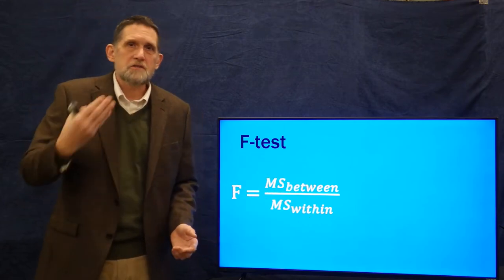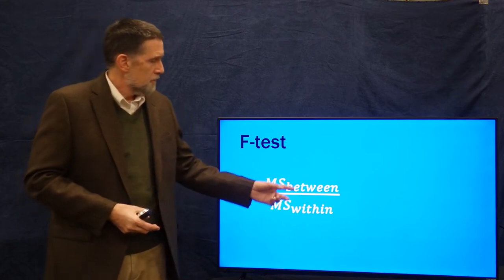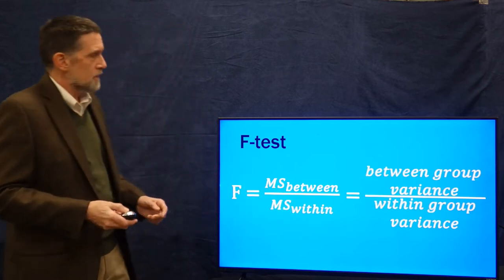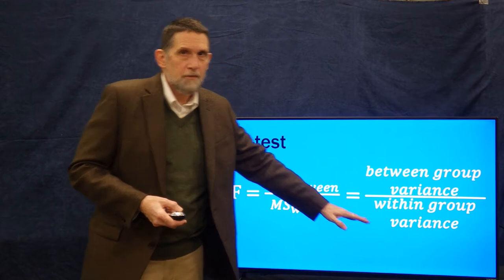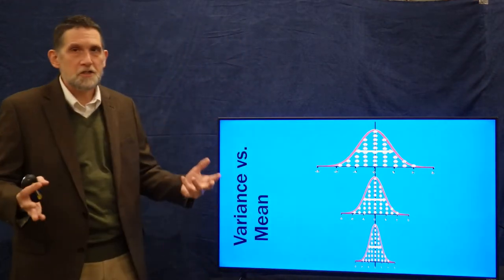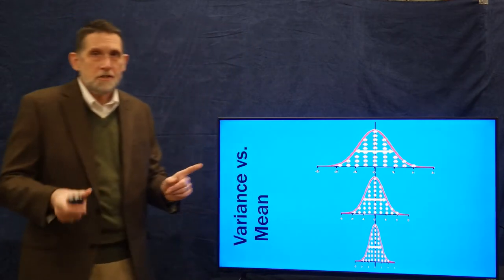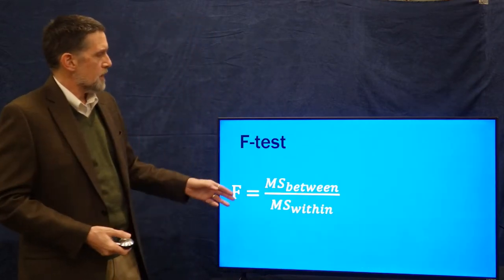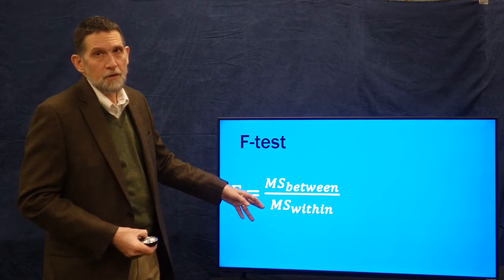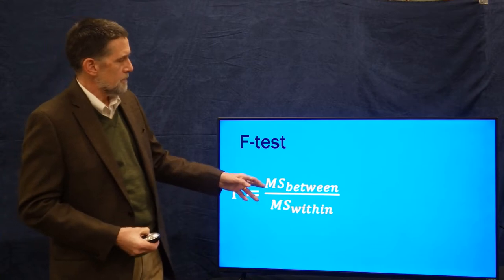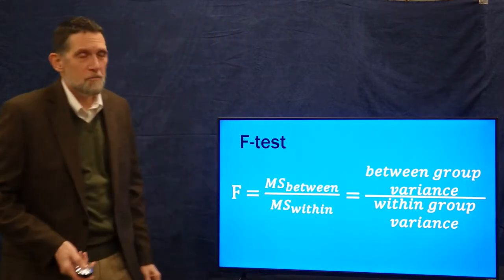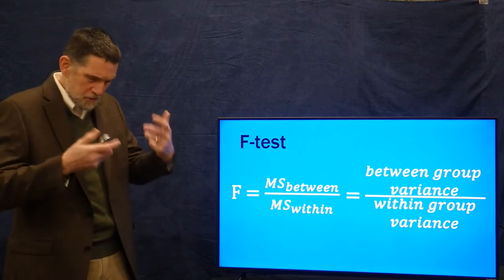Not in terms of its math, but in the end of what it is: F looks at the variance between groups as a ratio with the variance within groups. The variance within groups here could be essentially nothing, while here the variance within groups is great. If we have a small numerator and a large denominator, we get a small F. Between-group variance as a ratio of within-group variance — that's what F is. Conceptually, this is kind of like a T-test or a Z-test.